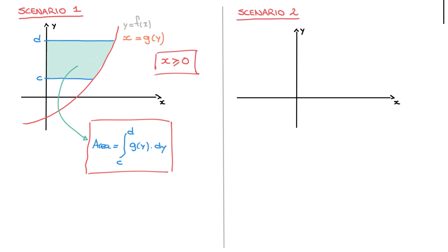But what happens if we have negative x-coordinates? In that case, we'll be dealing with Scenario 2. To illustrate that, let's say I have a second curve looking something like this, and again I'll say that's y equals to f of x. Once more, let's say we need to calculate the area enclosed by this curve and the y-axis between y equals to c and y equals to d.